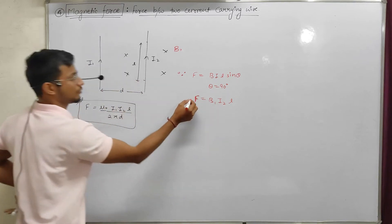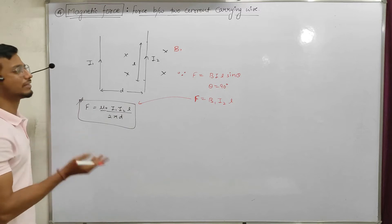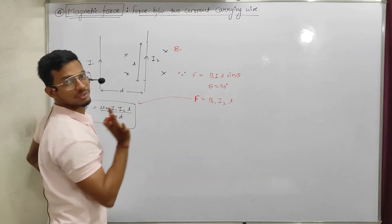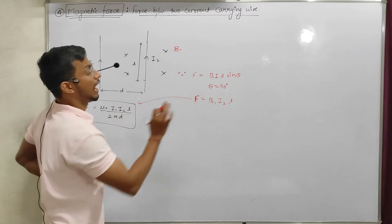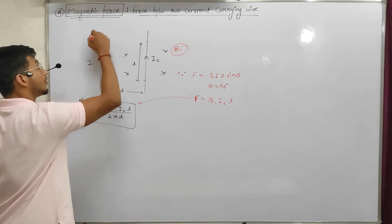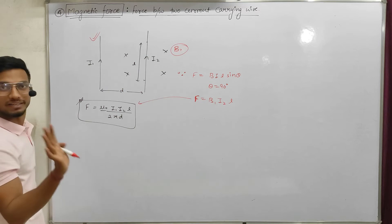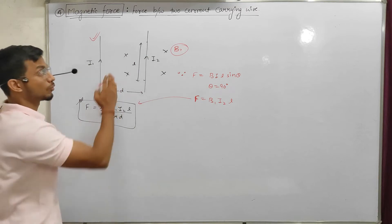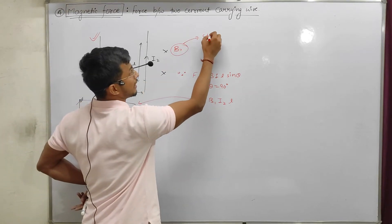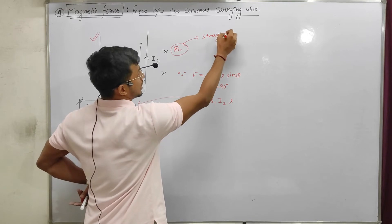Now, with this formula you have to derive the final formula. Just substitute the value of B1. B1 is the magnetic field produced due to the first wire. To find it, you need to know the formula of the magnetic field due to a long straight wire.